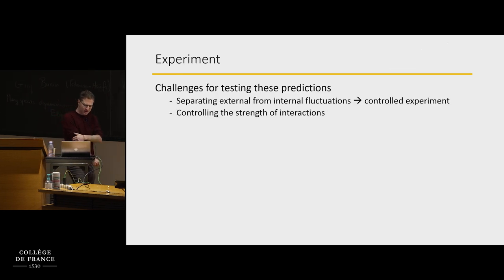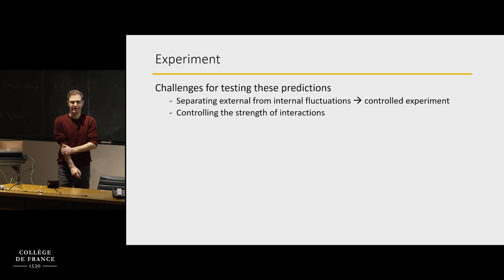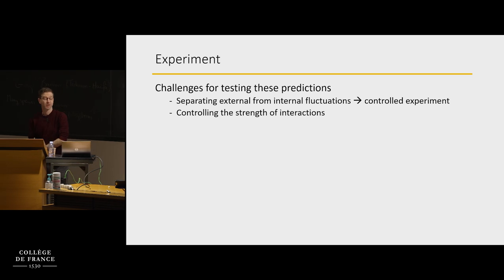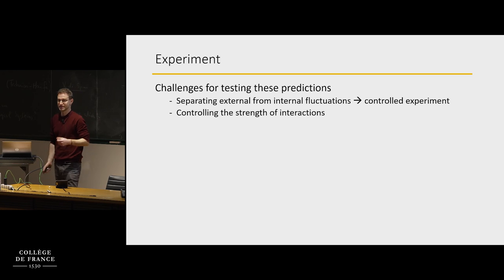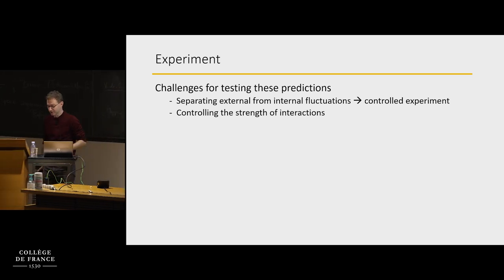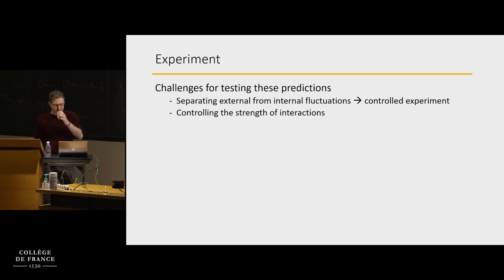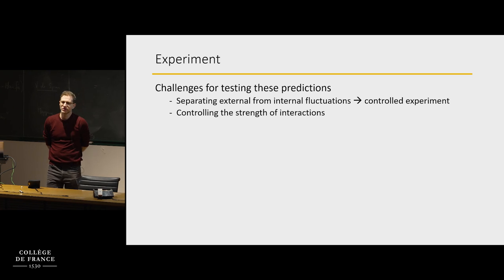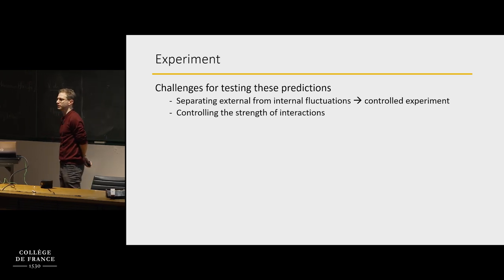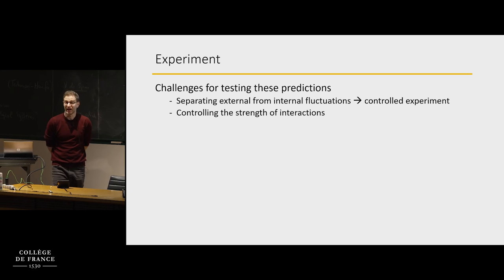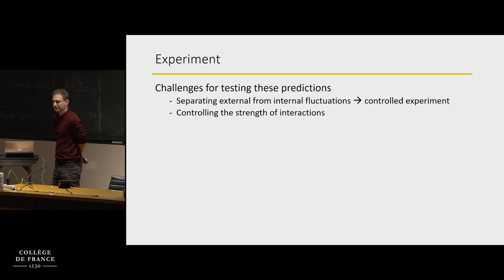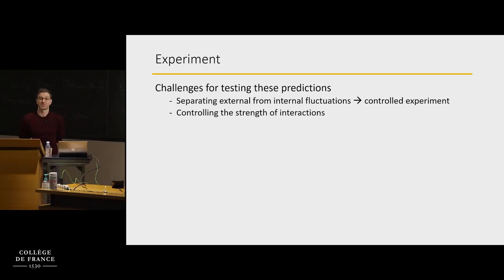The next question is: can we see any of this in any experimental or natural situation? What are the challenges in actually testing this with real organisms? First, if you see fluctuations in population sizes, you can always suspect they might be due to changes in conditions over time — that's always a possibility. This really calls for a controlled experiment.